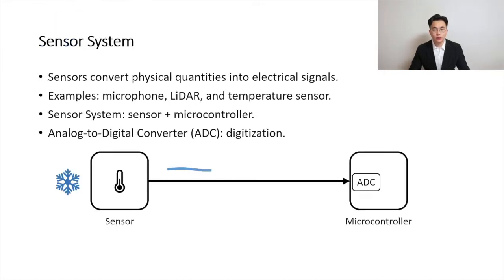Let's have a look at what a sensor system is. A sensor is an interface between the physical world and an electronic circuit. It is a device that can convert physical quantities such as sound and temperature into electrical signals. For example, in our smartphones, a microphone is a sensor that collects audio signals such as voice commands. Sensors can also be found in critical applications such as automobiles and nuclear plants. For example, a lidar sensor helps the automobile to see the surroundings, and a temperature sensor can monitor the temperature of a cooling system of a nuclear reactor.